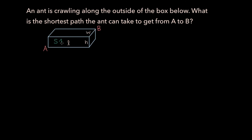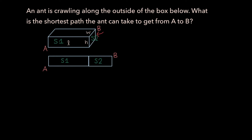Call the front face side 1 and the adjacent face side 2. Slit open the shared edge and unfold side 2 so that side 1 and side 2 are in the same plane. Looking at it front on, point A is on side 1 and point B is on side 2. Labeling the dimensions — L, H, and W — the shortest path is the diagonal from A to B. Applying the Pythagorean theorem gives a diagonal length of the square root of (L plus W) whole squared plus H squared. This is case 1.